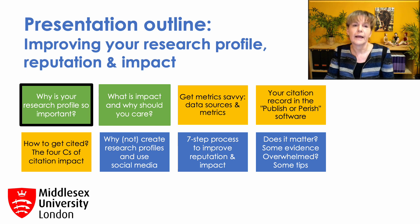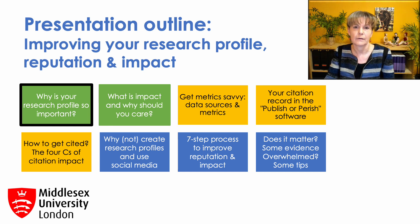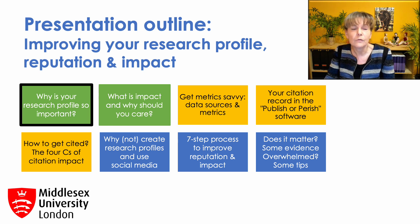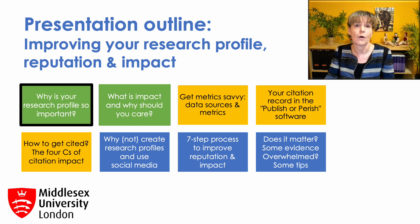I'll then explain how engaging in academic behavior that is both ethical and professional can improve both your citations and external impact. The next three sessions will be all about research profiles and social media. I'll talk about the importance of creating research profiles and why you would want to use or not use social media in academia. As this might all be a bit overwhelming, I will then provide you with a clear seven-step process that you can use to improve your reputation and impact. I will finish off with some evidence showing that sharing your research on social media is effective and some tips on what to do if you still don't know where to start.